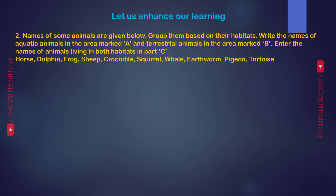Question 2. Names of some animals are given below. Group them based on their habitats. Write the names of aquatic animals in the area marked A and terrestrial animals in the area marked B. Enter the names of animals living in both habitats in Part C. Animals: Horse, Dolphin, Frog, Sheep, Crocodile, Squirrel, Whale, Earthworm, Pigeon, Tortoise.